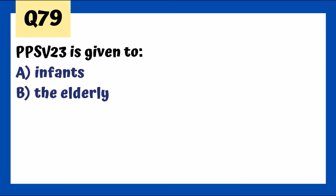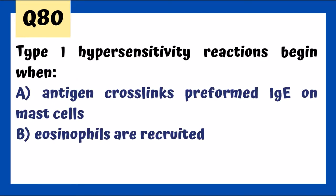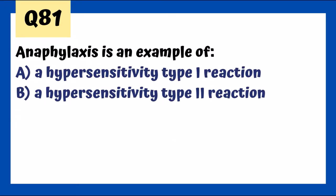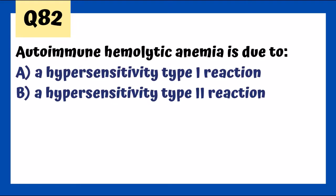Type 1 hypersensitivity reaction begins when antigen cross-links preformed IgE on mast cells. Eosinophils are recruited later in the type 1 reaction. Anaphylaxis is an example of type 1 hypersensitivity. Autoimmune hemolytic anemia is type 2 hypersensitivity — type 2 is all about antibodies binding, leading to cell destruction or inflammation. In autoimmune hemolytic anemia we see IgG and IgM in cold and warm forms.